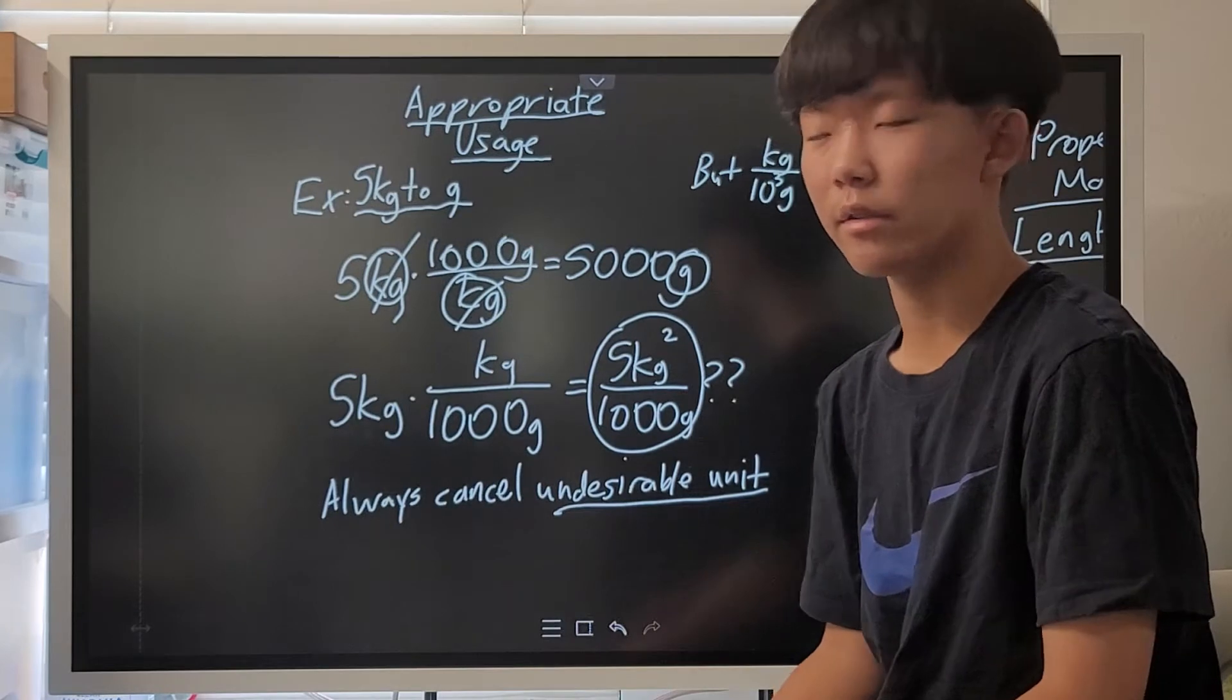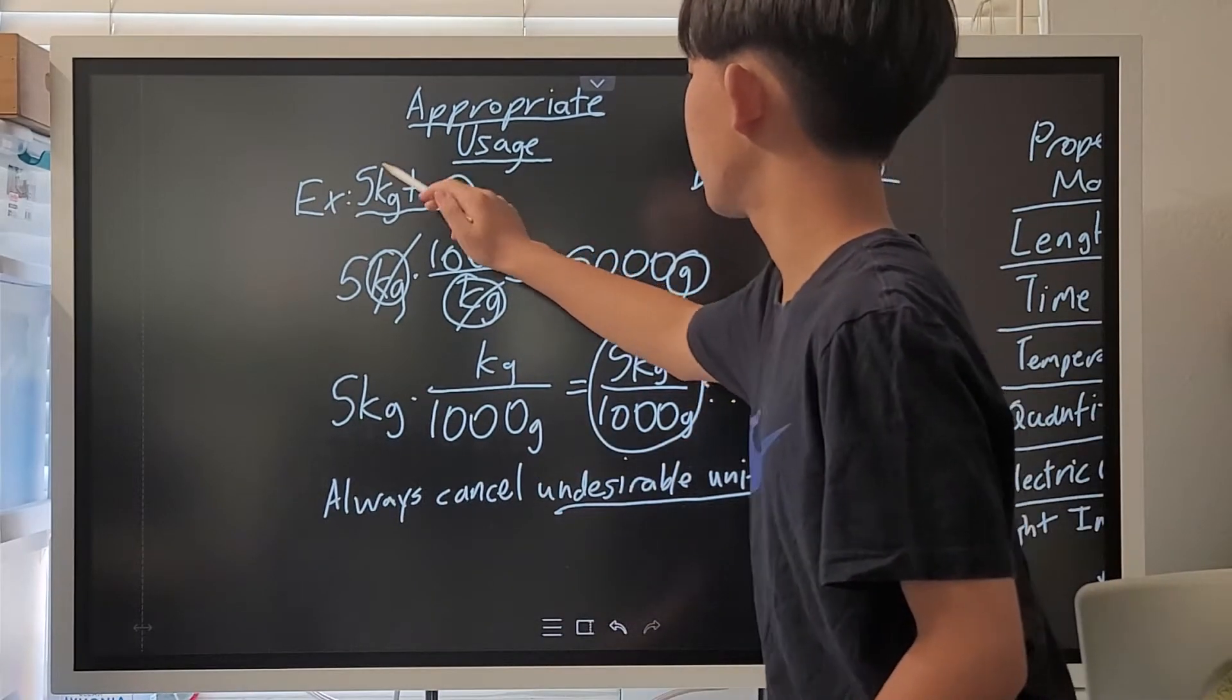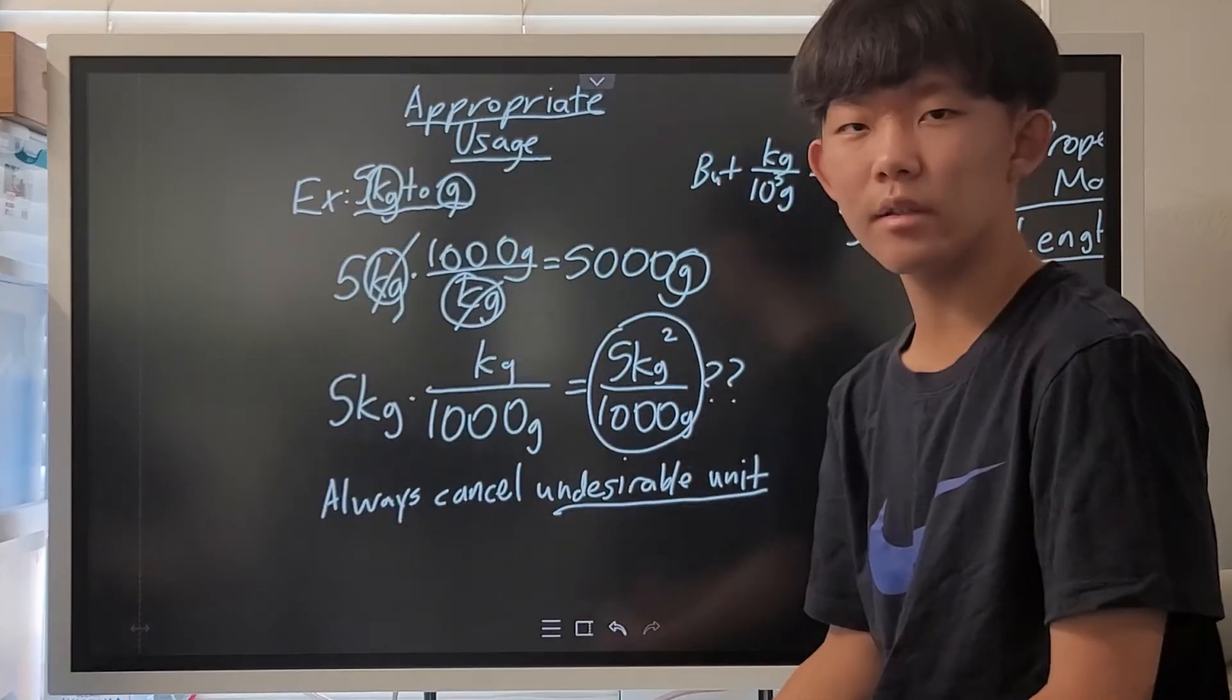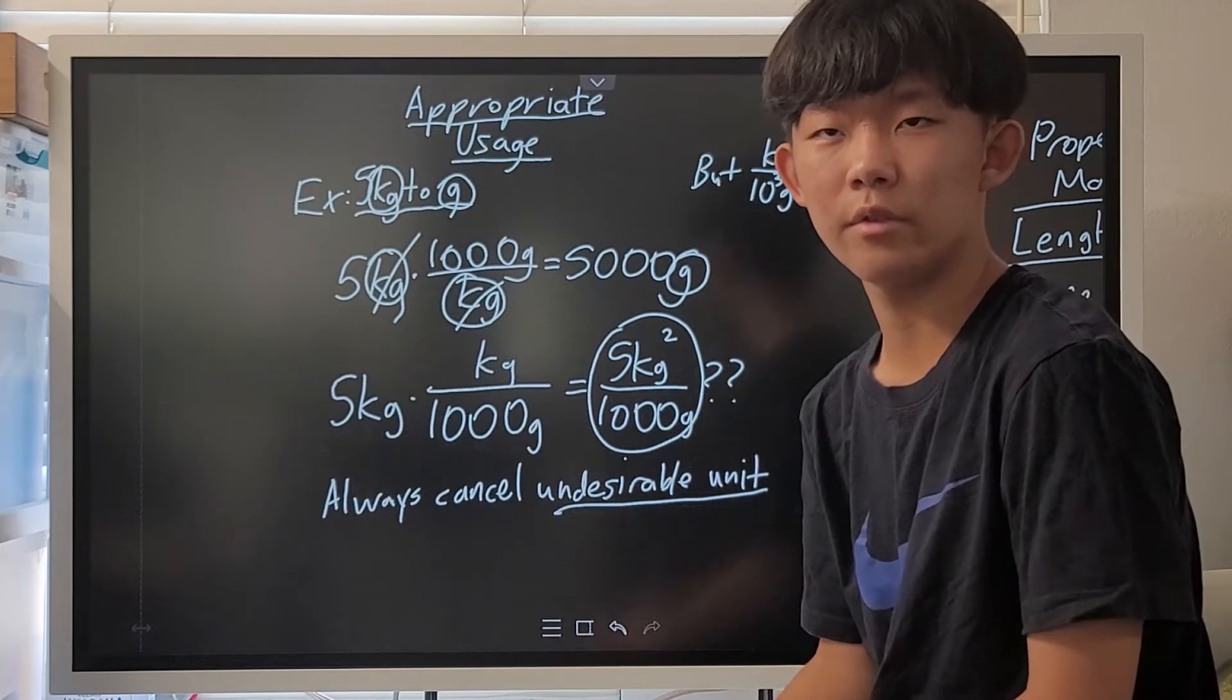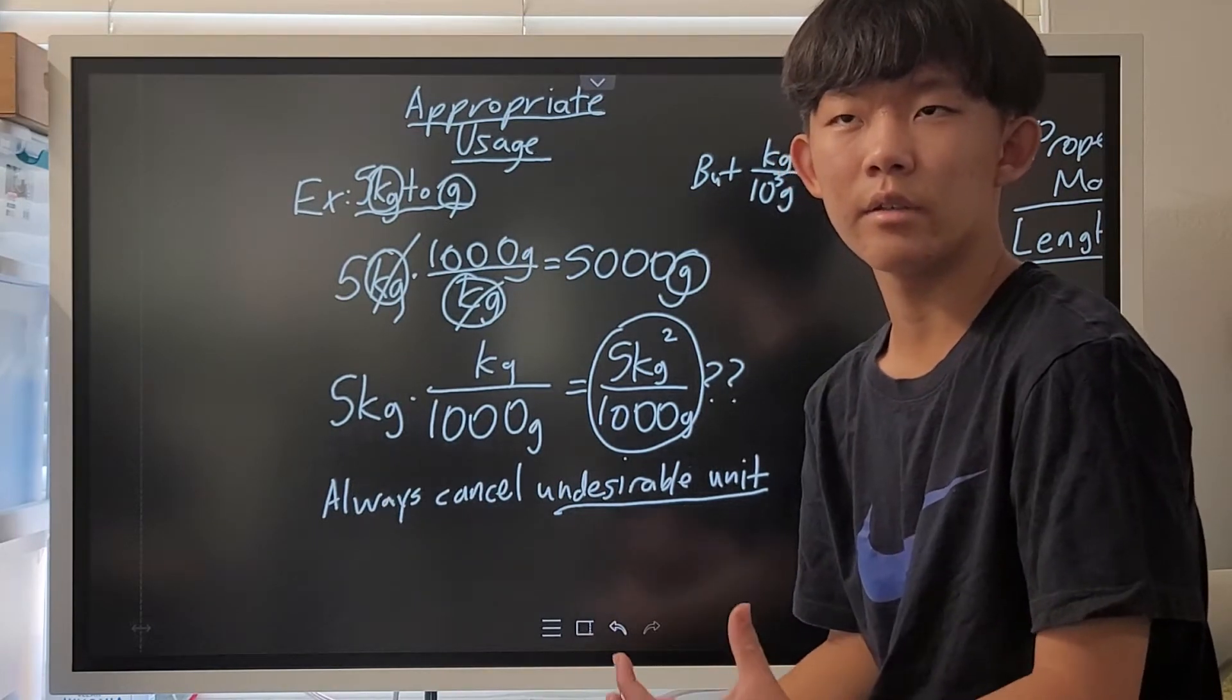For example, here, since we want grams but we have kilograms, put kilograms in the denominator for your conversion factor so that the kilograms can cancel.